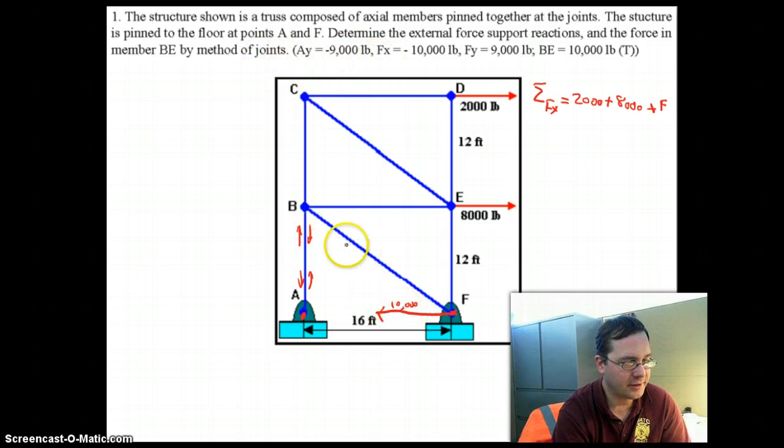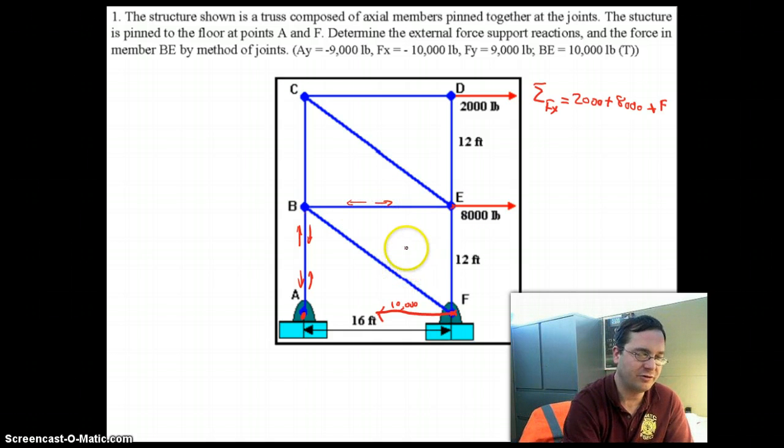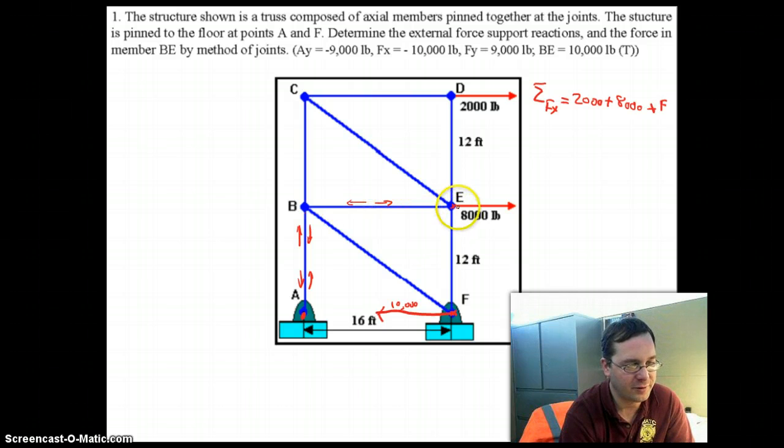So if we think about member BE, well, member BE is going to be pulled to the right by, if you think about the reaction at point E, at joint E here, the only thing that's keeping joint E from sliding to the right is the fact that member BE is in tension and member BE is pulling to the left. Now, with how much force is it pulling to the left? Well, it's pulling to the left with enough force to counteract this 8,000-ton pull, but also enough force to counteract the horizontal component of member CE, which has to be 2,000.